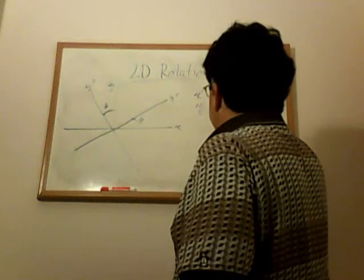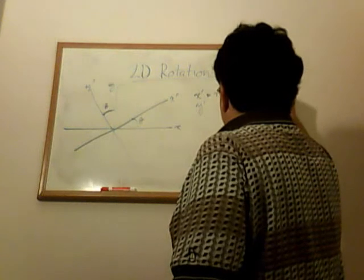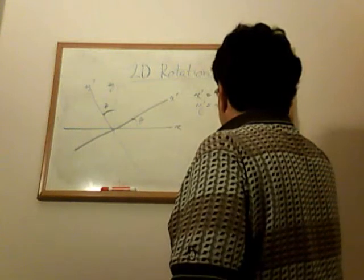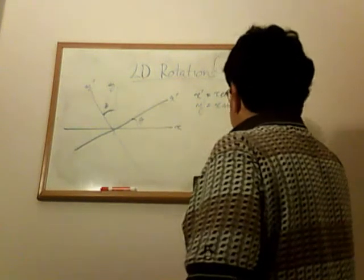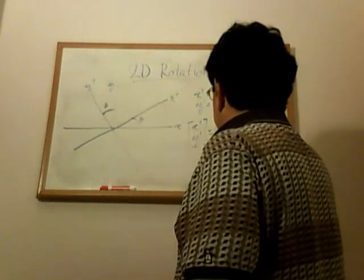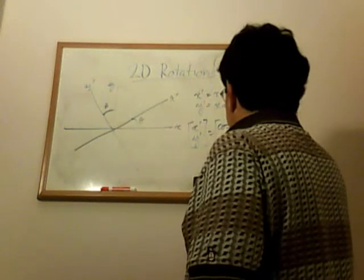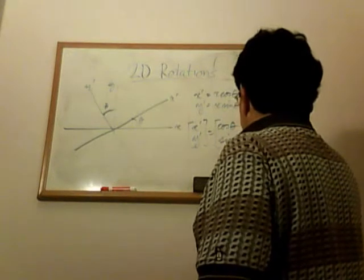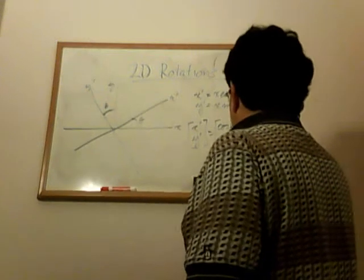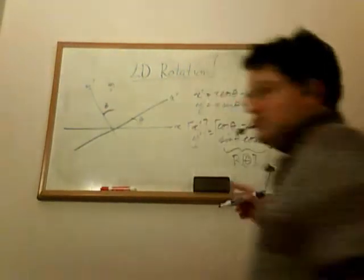I'll just write down the equation. We have x prime equals x cos theta minus y sin theta. As a matrix equation, we can write this as (x prime, y prime) equals the matrix (cos theta, -sin theta; sin theta, cos theta) times (x, y). We call this matrix R of theta. So that's just a two-dimensional rotation.